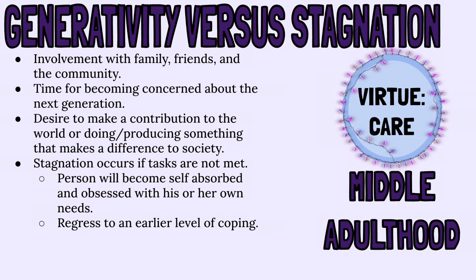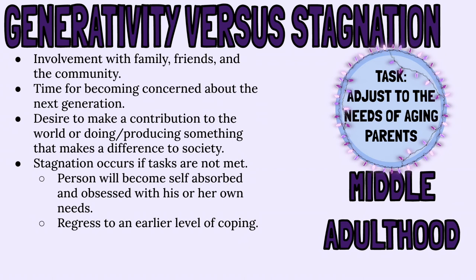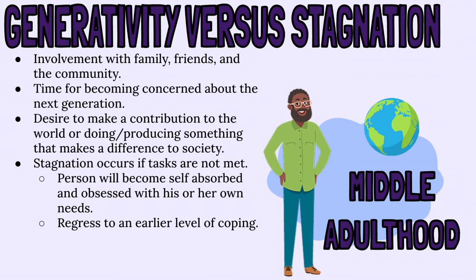Let's discuss generativity versus stagnation in the middle-aged adult. The middle-aged adult's virtue is care. Their task is to achieve creativity, productivity, adjust to the needs of their aging parents, and establish the next generation. During the middle-aged adult years, involvement with family, friends, and the community is important. The middle-aged adult has a strong desire to contribute to society, and this is a stage in which a person is strongly concerned for the next generation — they have a need to nurture and guide younger people. If these tasks are not met, the person will become self-absorbed and obsessed with their own needs, stopping them from moving forward. He or she may also regress to earlier mechanisms of coping.